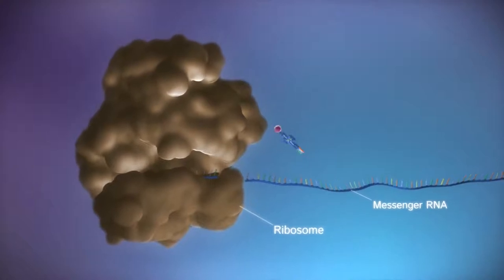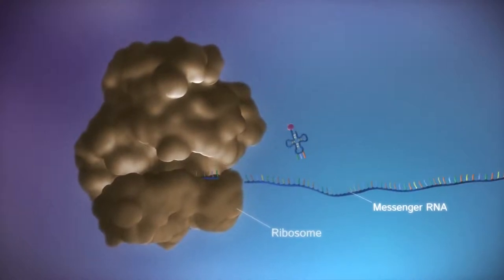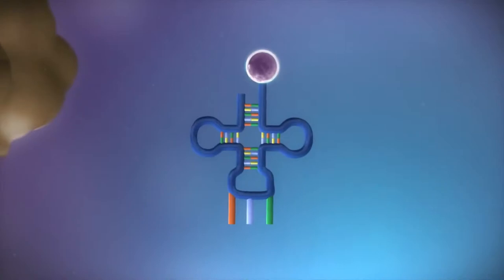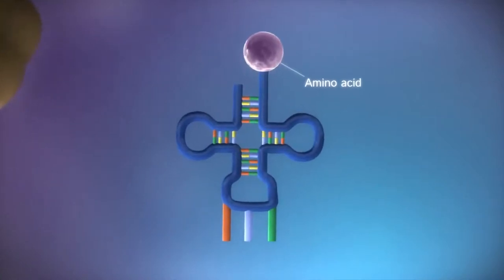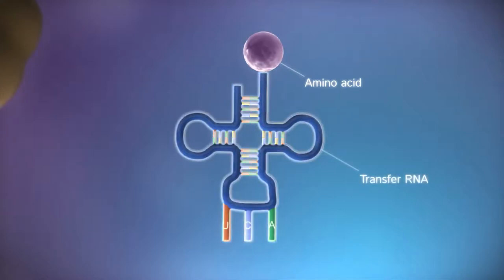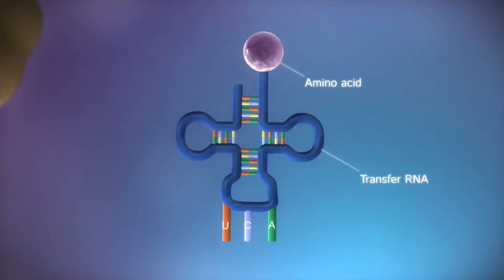The ribosome reads the code in the messenger RNA to produce a chain made up of amino acids. There are 20 different types of amino acid. Transfer RNA molecules carry the amino acids to the ribosome.